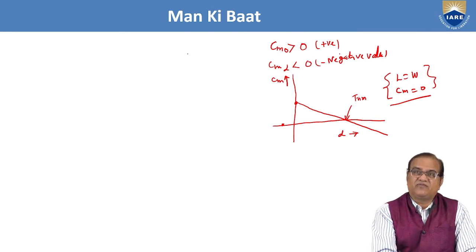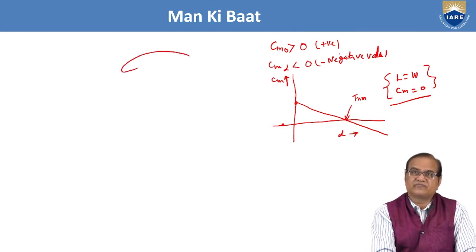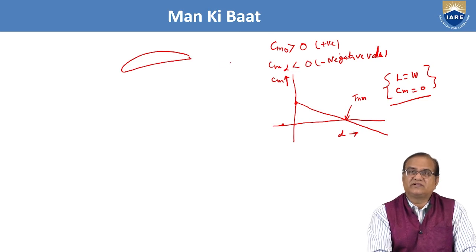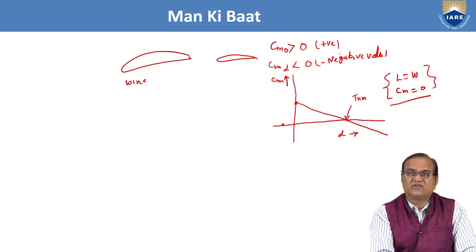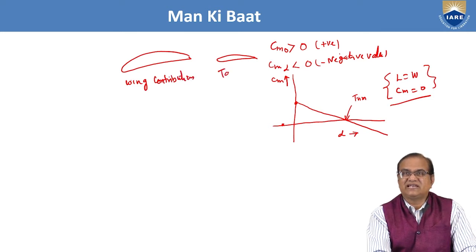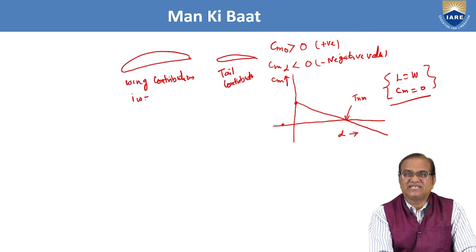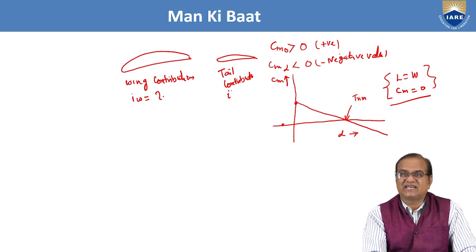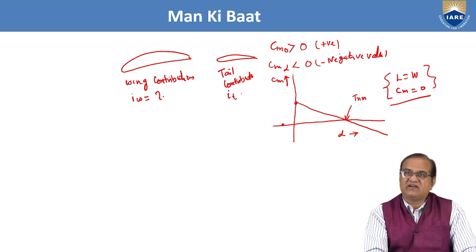We have also seen the effect of the wing and the tail — wing contribution and tail contribution. We saw how the wing setting angle Iw and the tail setting angle It affect aircraft stability.